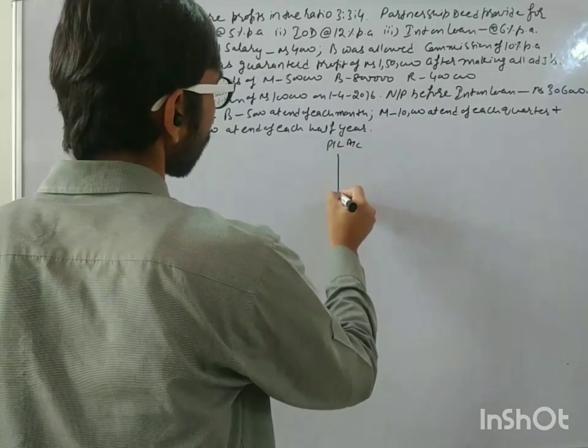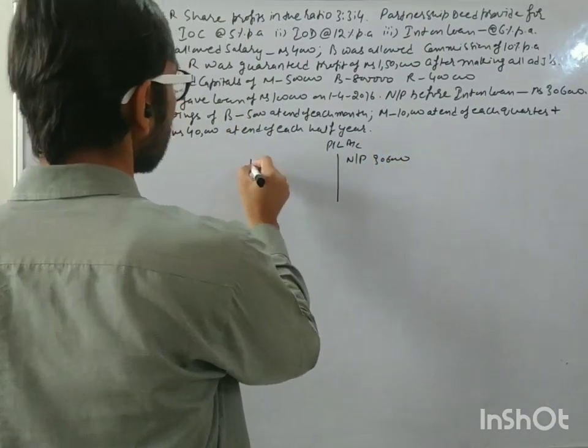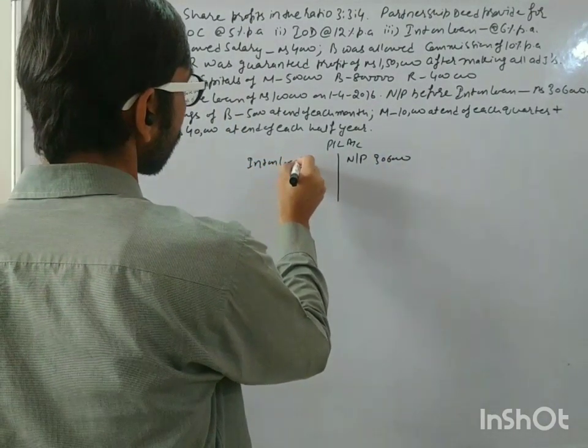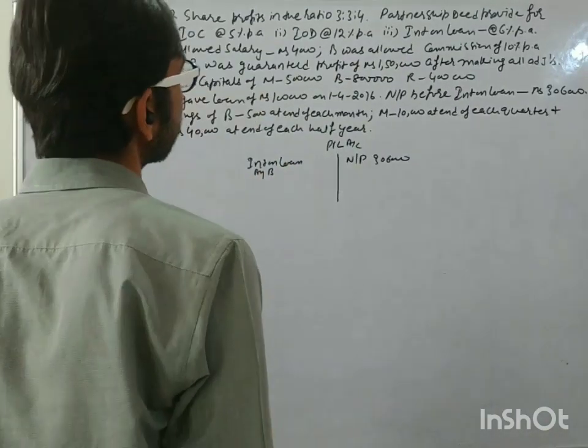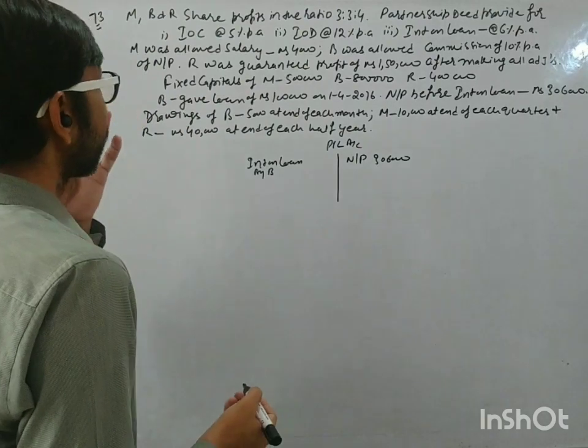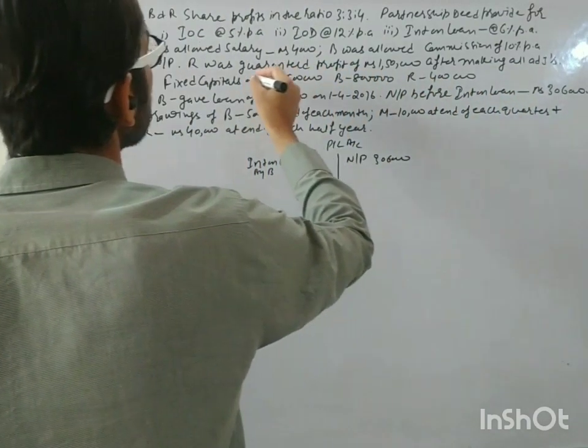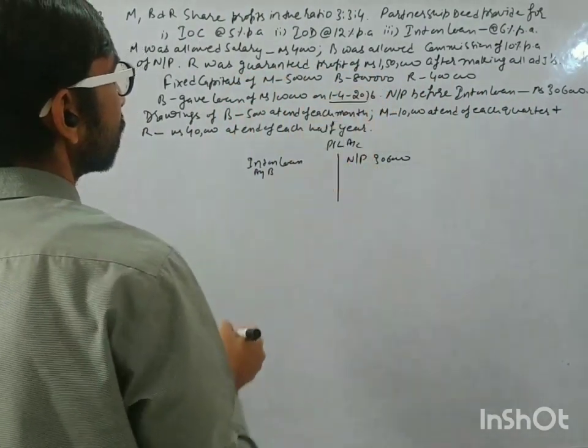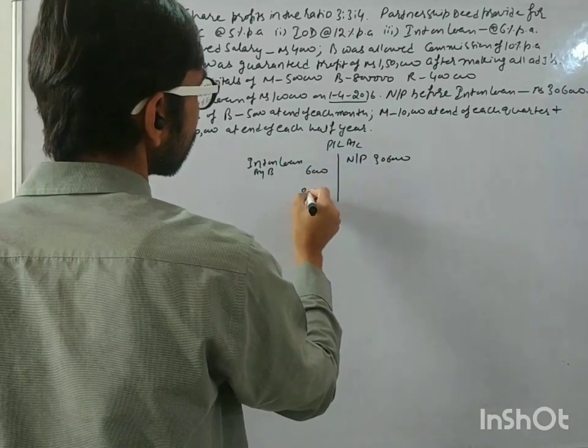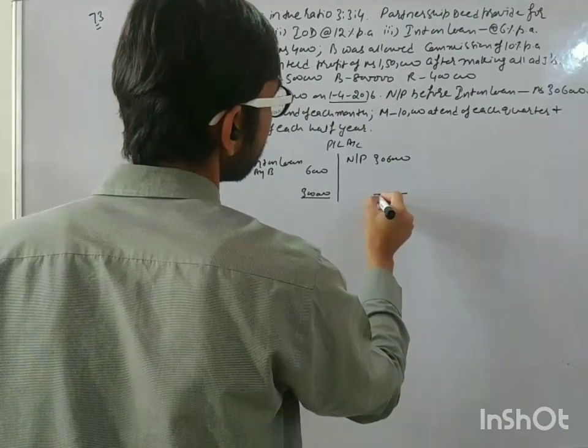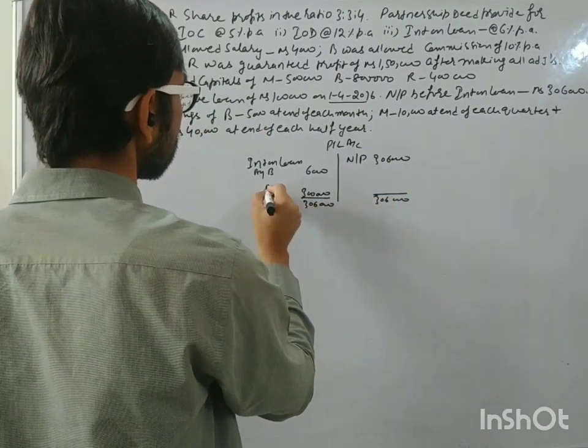First of all, P&L account. Net profit is 3 lakh 6,000. Profit to be transferred to P&L appropriation is 3 lakhs. Interest on loan by B, it is 6,000 for the half period. So net profit to be transferred to P&L appropriation is 3 lakhs.